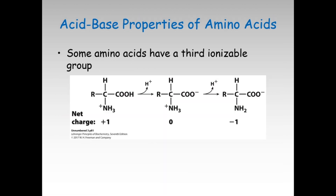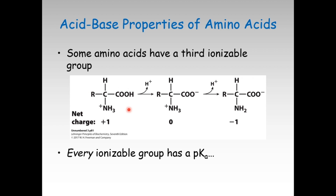In addition, some amino acids have a third ionizable group. If the R group has another ionizable functionality, then you have an additional complication for this amino acid in addition to COOH and NH3+. The R group would also be ionizable. Every ionizable group has a pKa.